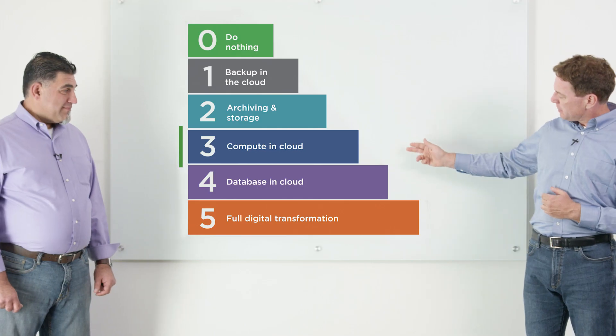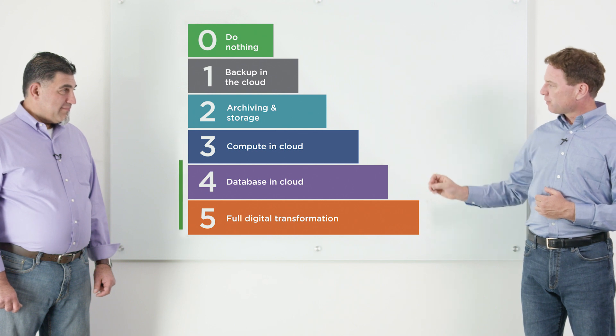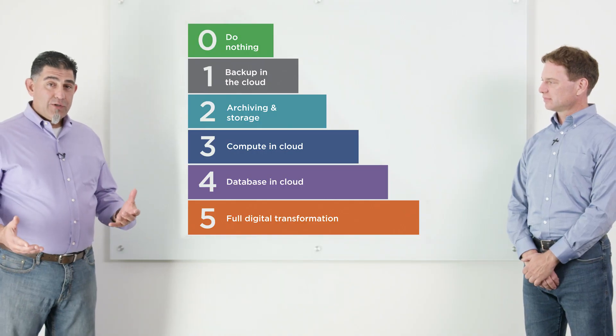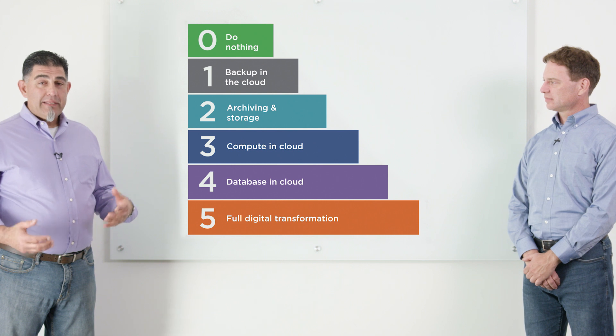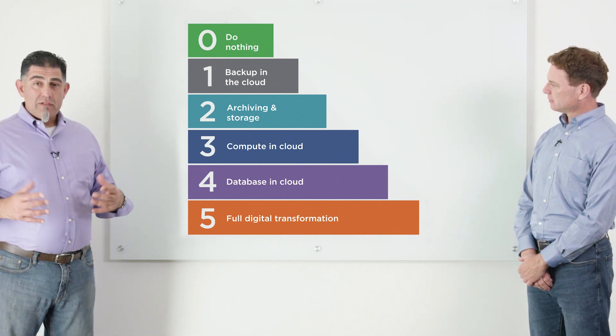That actually begins to blend into levels four and five. Once the data is in here, it's available from level three all the way up to the max level of level five. So many companies have started their cloud journey already, and they're typically in the level one and two layers of this cloud maturity model.